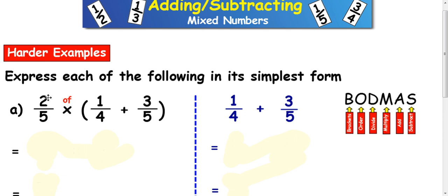So the question here is 2 fifths times 1 quarter plus 3 fifths in brackets. It looks quite confusing, quite complicated, but if you just take it one step at a time you can deal with this.